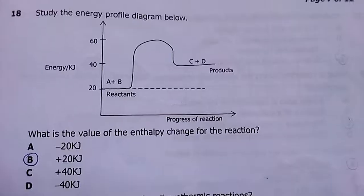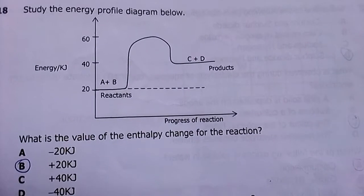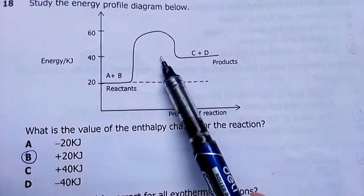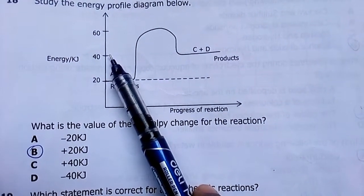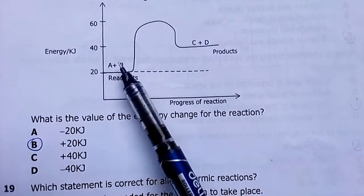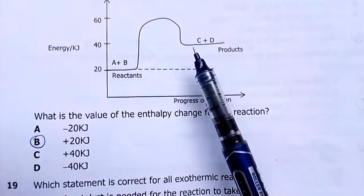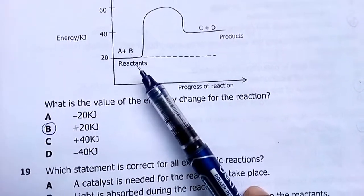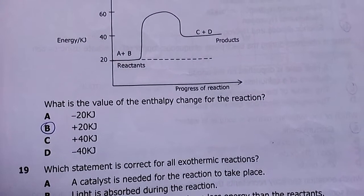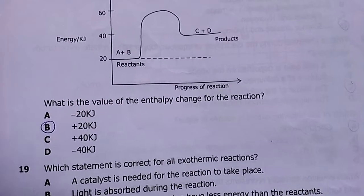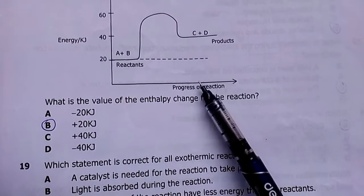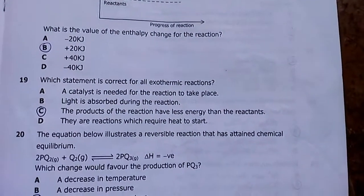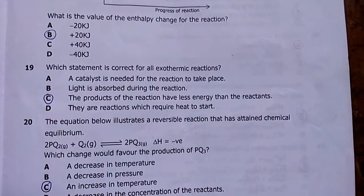Question eighteen: study the energy profile diagram. The reactants are at a lower energy level and the products are at 40 — the difference is 20. This is an endothermic reaction; products have higher energy content than reactants. The enthalpy change is positive 20 because the system absorbed energy. My answer is +20.